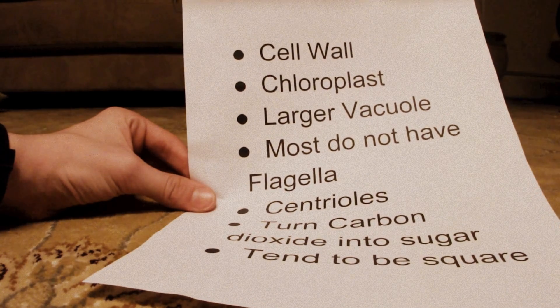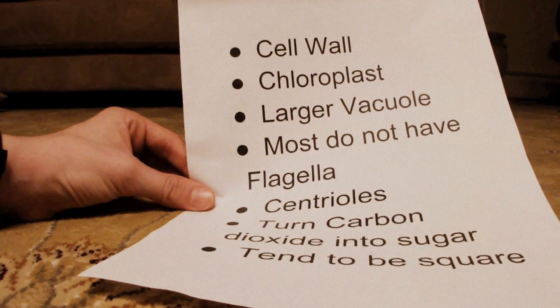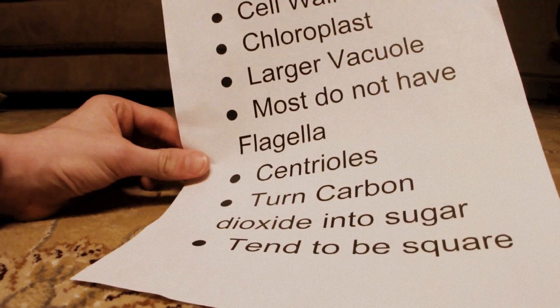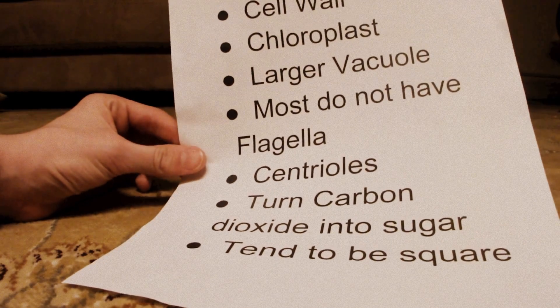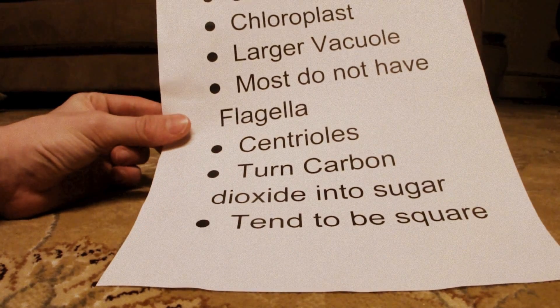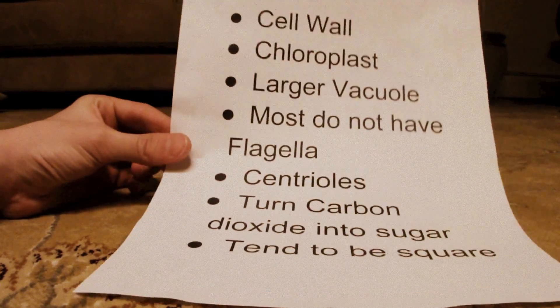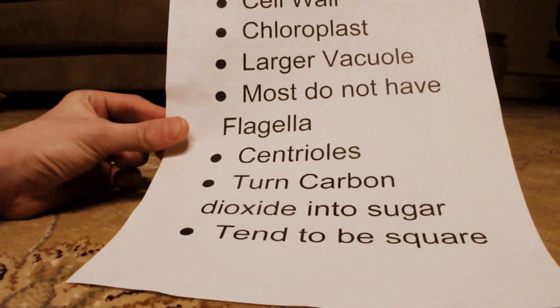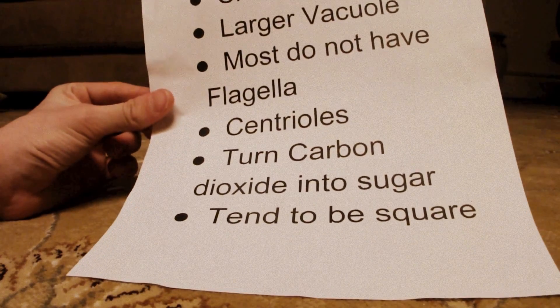Most plant cells do not have flagella, which help the cells move. It also has centrioles, which are used during cell division. The opposite of animal cell, it turns carbon dioxide into sugar, and they tend to be square and angular.